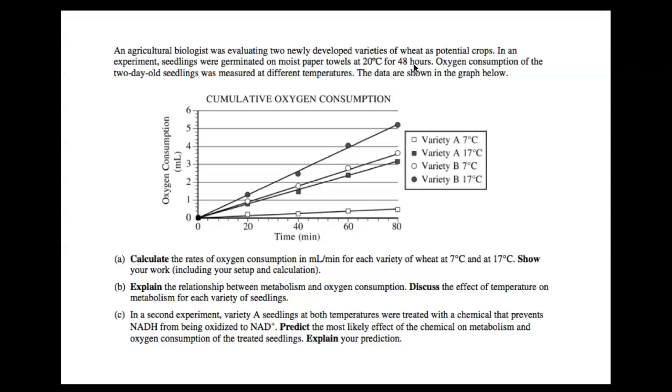What I want to do is go over the answer. So what you have here is oxygen consumption over time. You have four lines, and then you can see over here different temperatures. So it says that an agricultural biologist was evaluating two newly developed varieties of wheat. So we have two types of wheat seedlings that were germinated on moist paper towels at 20 degrees Celsius. Oxygen consumption of the two-day-old seedlings was measured at different temperatures. So you have wheat type A, wheat type B, each one was tested at a different temperature, and you're looking at oxygen consumption.